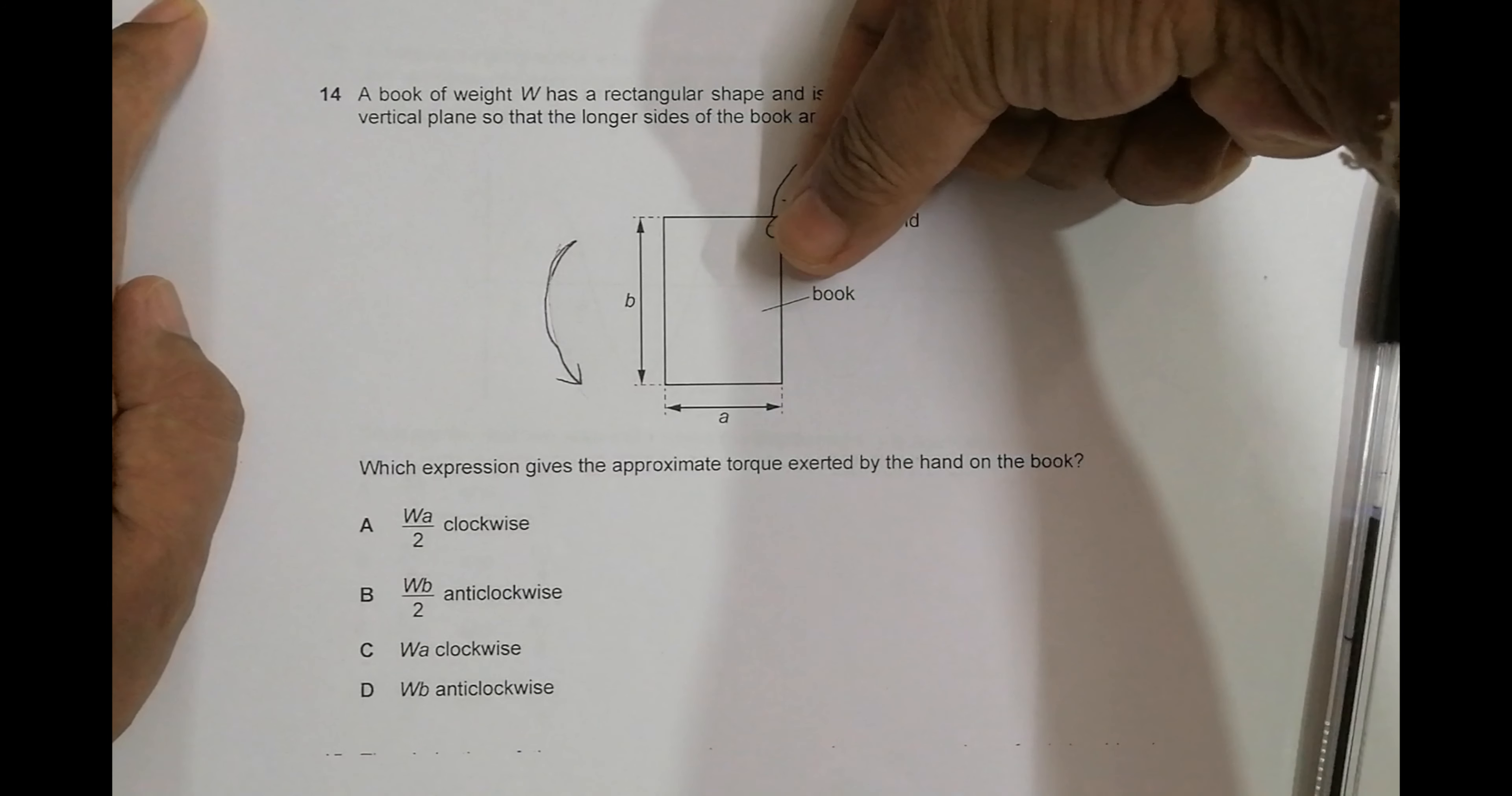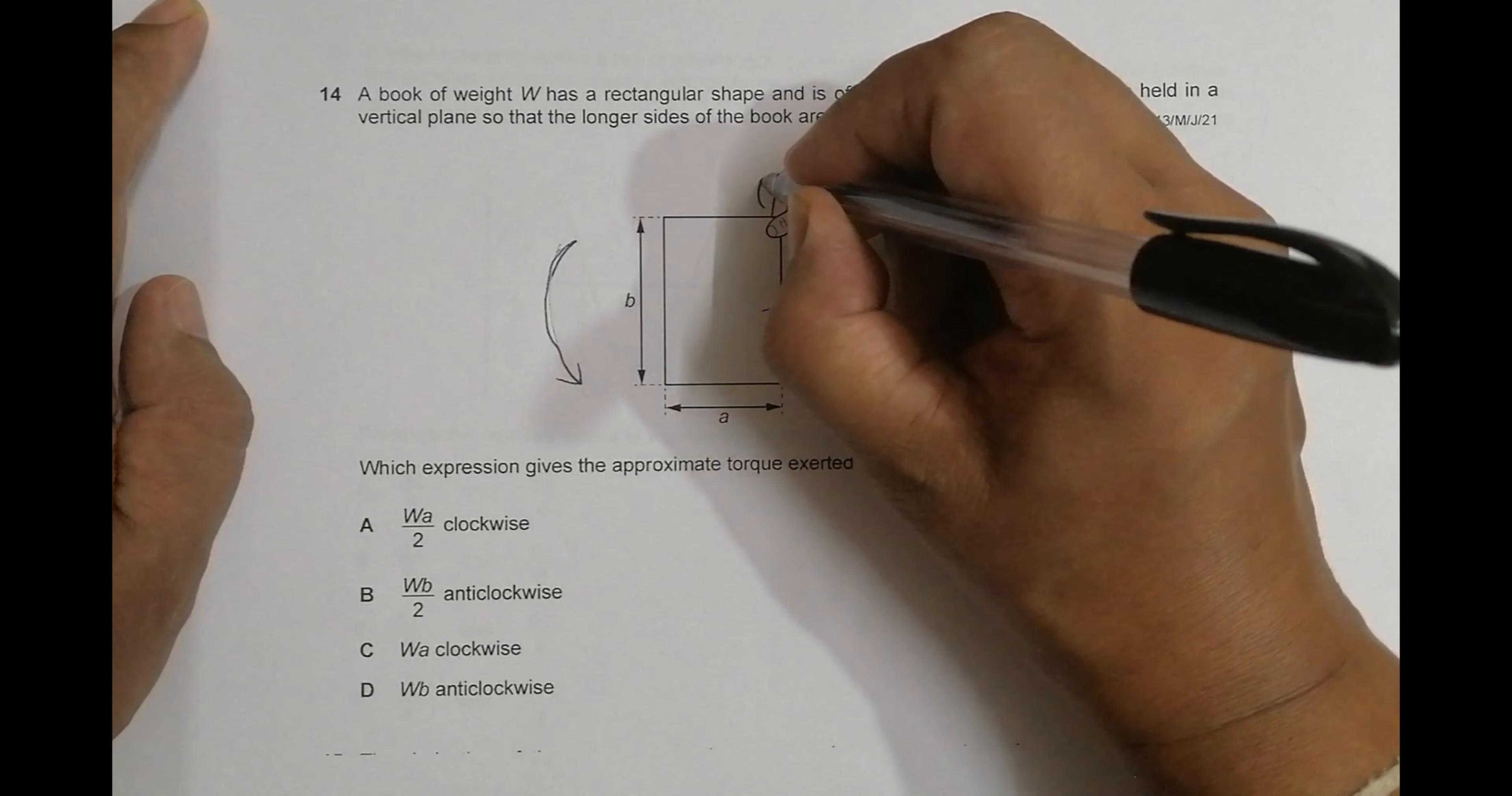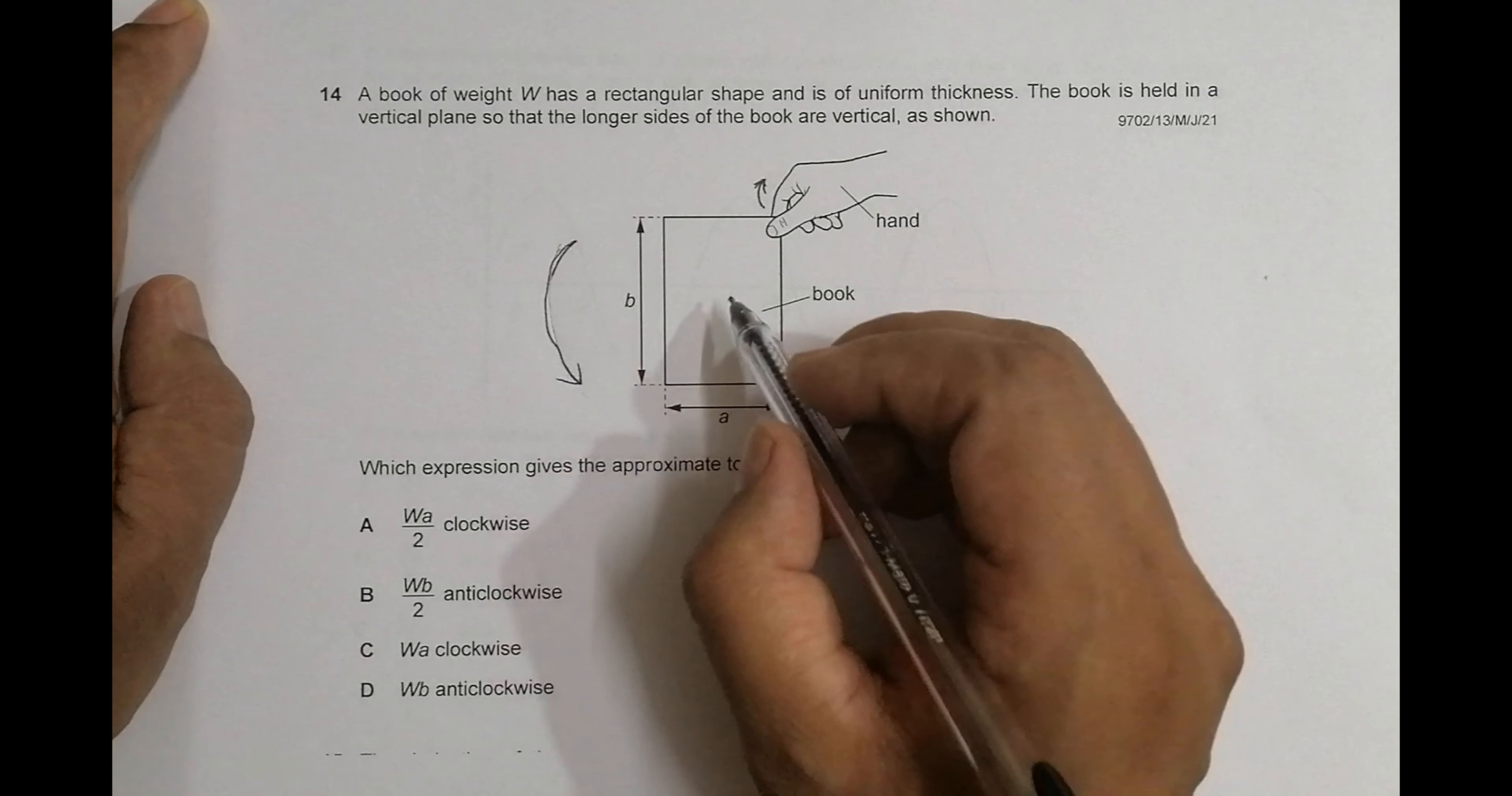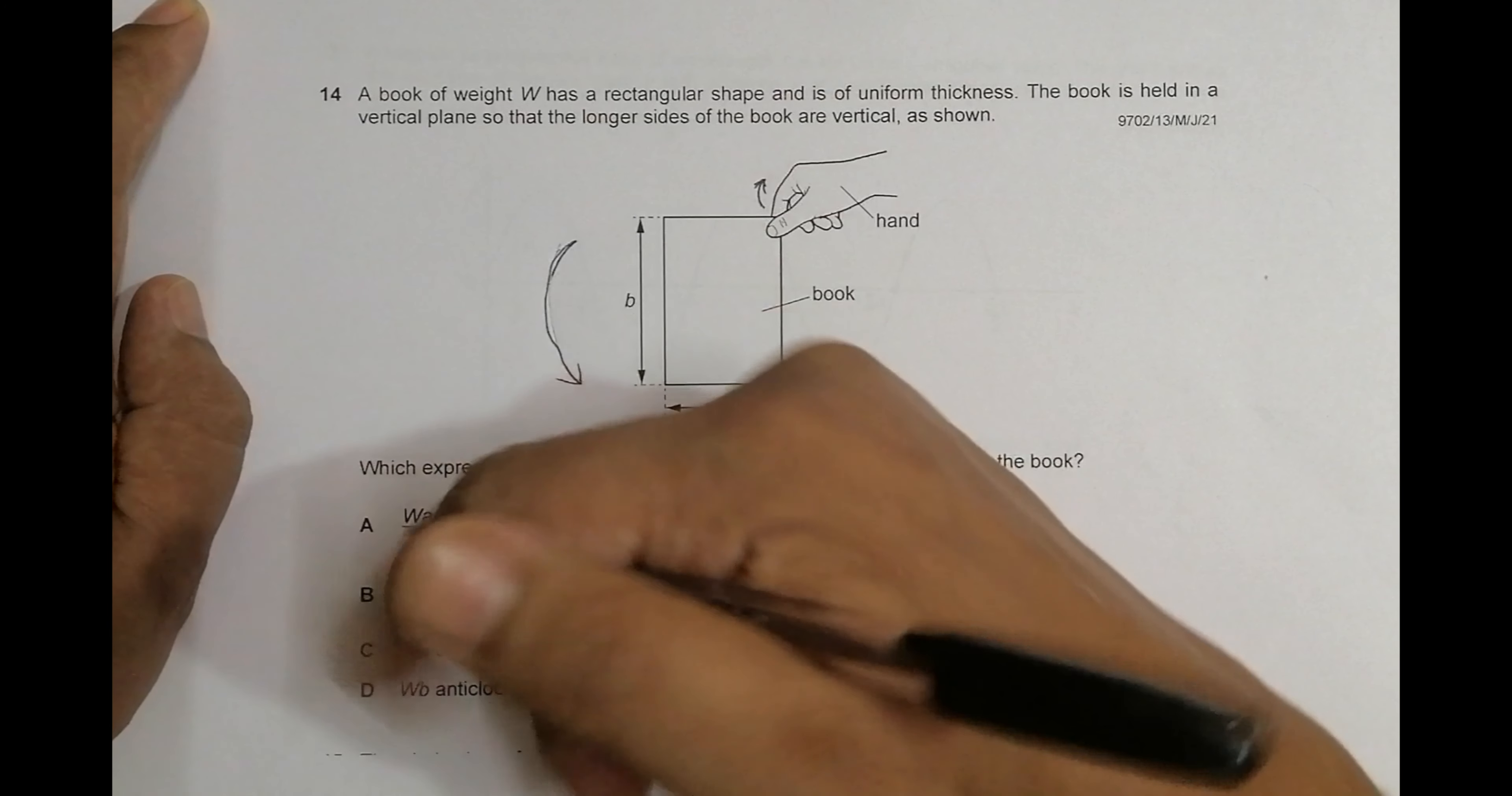It is exerting torque like this, somewhat clockwise. The fingers are exerting torque like this. Now what we need to do is first find the amount of torque exerted by this book in the anticlockwise direction.